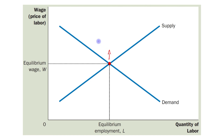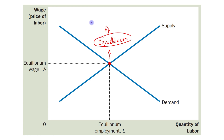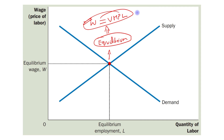At the equilibrium point, the wage is equal to VMPL, and this is the condition for profit maximization.